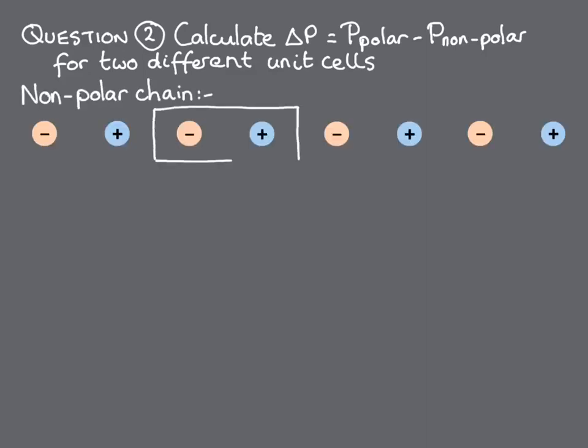Let's remind ourselves first of the results we obtained for the non-polar chain, where we showed that this unit cell has polarisation equal to q over 2, and this one has polarisation minus q over 2.